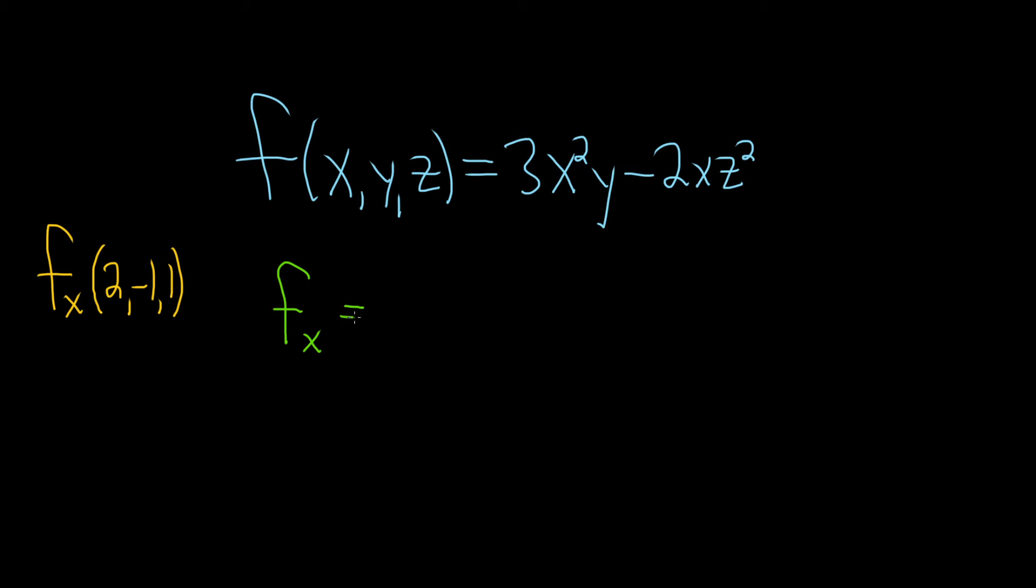So let's do it. The y is just going to hang out here, and we'll just differentiate the x squared. So 2 times 3 is 6. You bring it down using the power rule. Then just subtract 1, so you get x to the 1. And again, the y is a constant, just like the 3, so it just stays there.